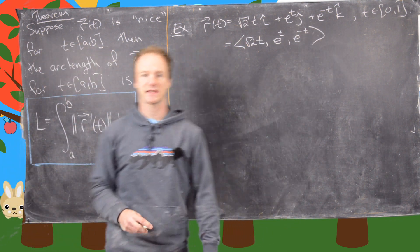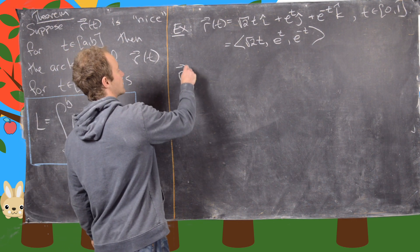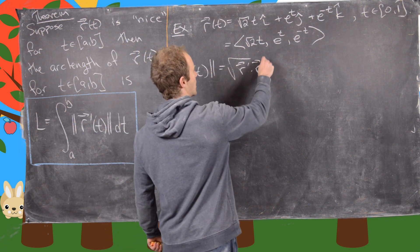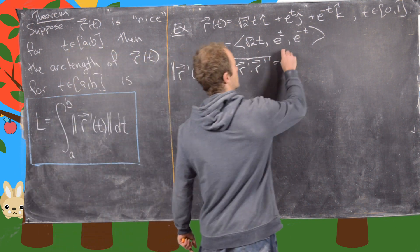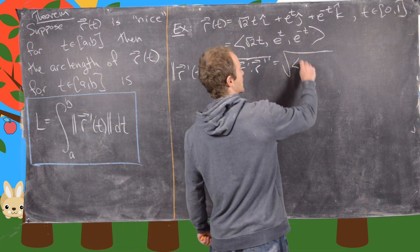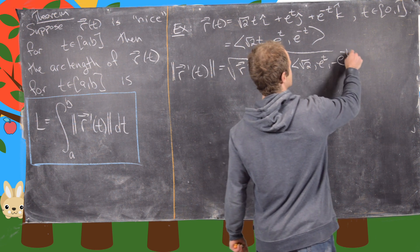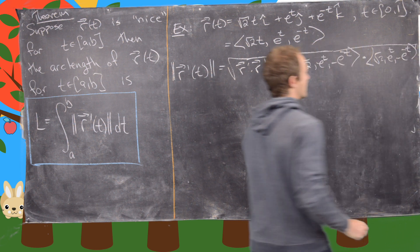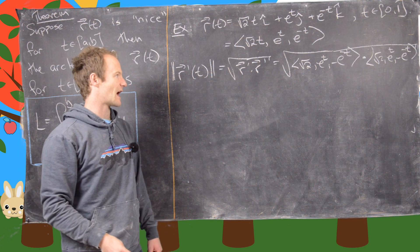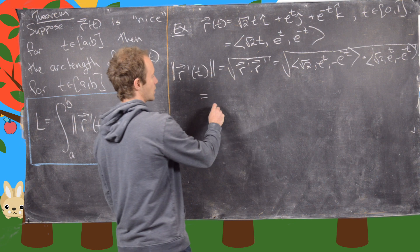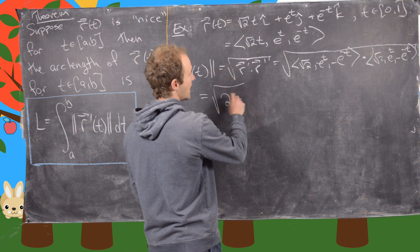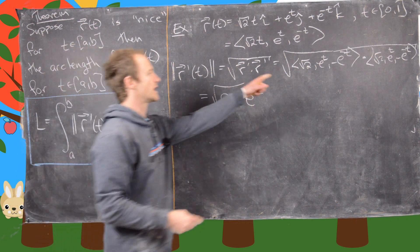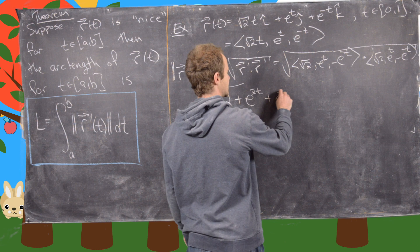Since we need to calculate this outside of the integral, let's compute the magnitude of r prime of t. Notice that's the same as the square root of r prime dot r prime. Taking r prime, we get (root 2, e to the t, minus e to the minus t), dotted with itself, giving us the square root of 2 plus e to the 2t plus e to the minus 2t.